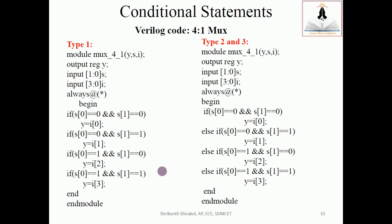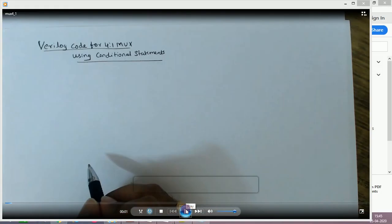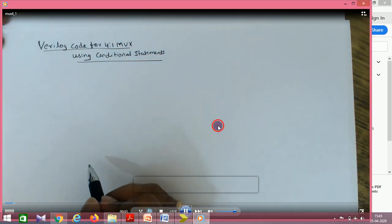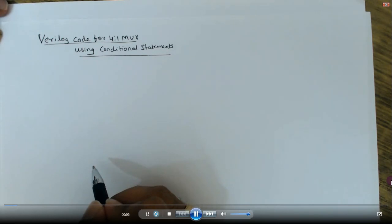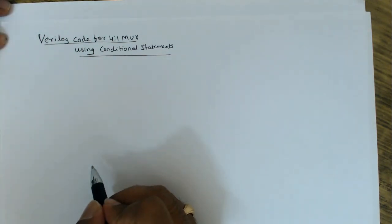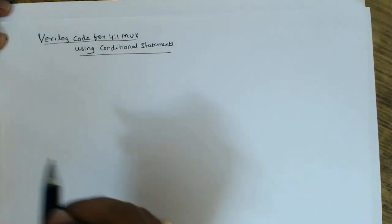Now we'll look at the Verilog code for a 4-to-1 mux. I'm using Type 2 and Type 3 together — there's not much difference, as sometimes we use one if-else and other times we need multiple if-else statements, which becomes nested if-else. Before writing the code, I'll do some paperwork for better understanding.